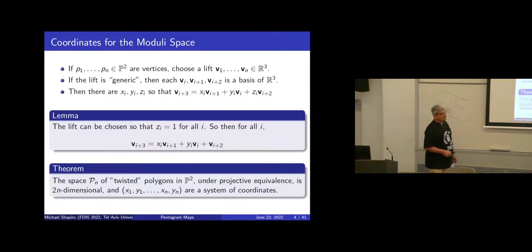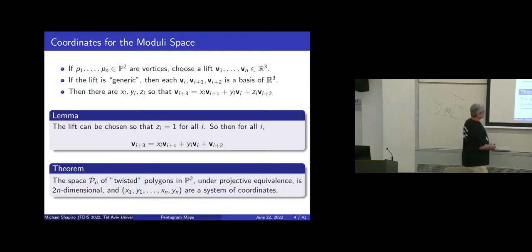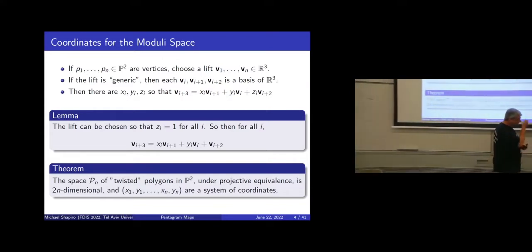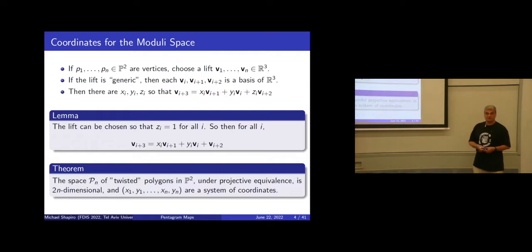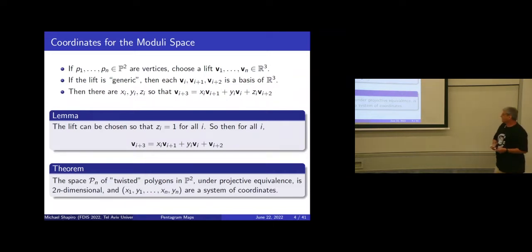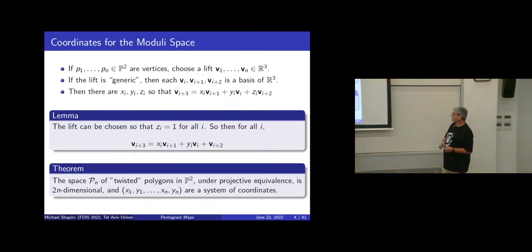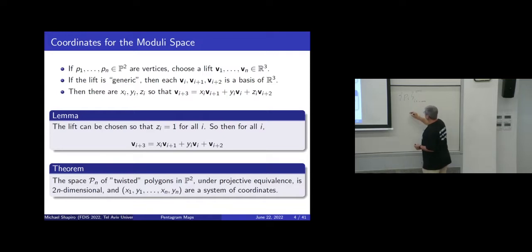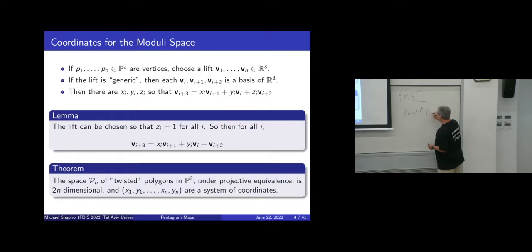The question is to study this map. One important observation is that this map is equivalent with respect to projective transformations, so we can define it on projective classes of n-gons. To make life a bit easier, we consider something called a twisted n-gon. A twisted n-gon in the plane is an infinite collection of points with the condition that p_{i+n} equals some fixed element of the Möbius group applied to p_i, for any i.